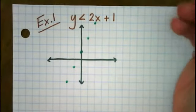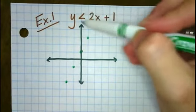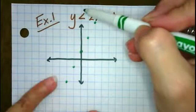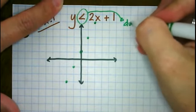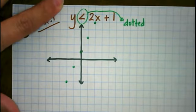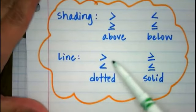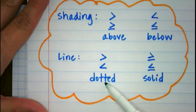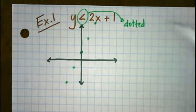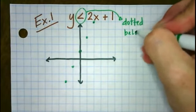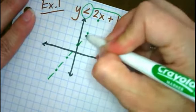Now I need to decide if the line should be solid or dotted. Looking at this symbol — less than — that tells me it should be a dotted line. Flashing back to our rules: less than means dotted line, and for shading, less than means we shade below. So we need a dotted line and then we want to shade below. I'm going to draw a dashed line first.